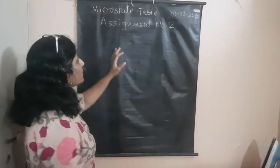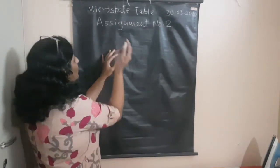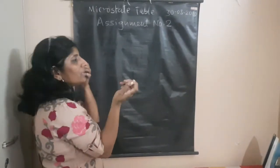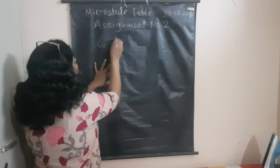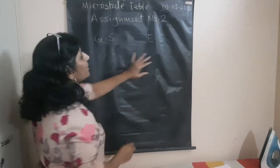The question will be: construct the microstate table. It may be for ground state configuration or excited state configuration. It is a 5-mark question.